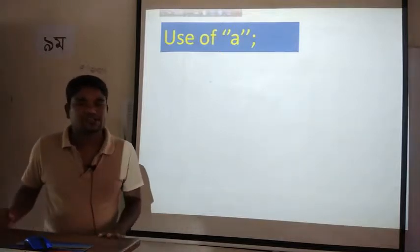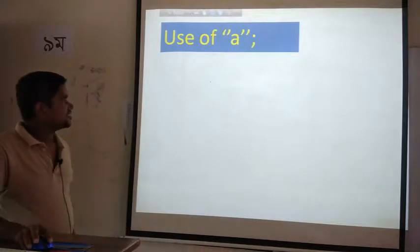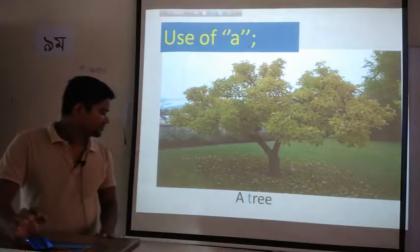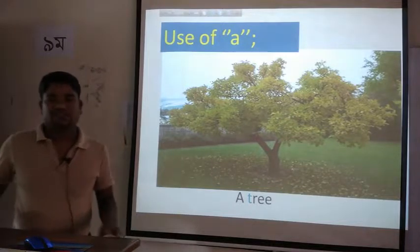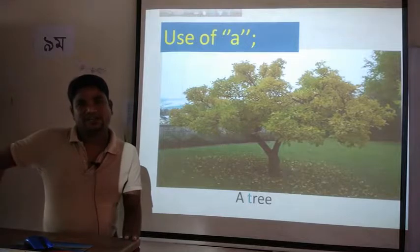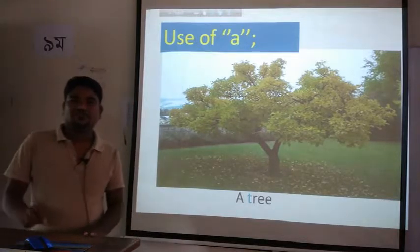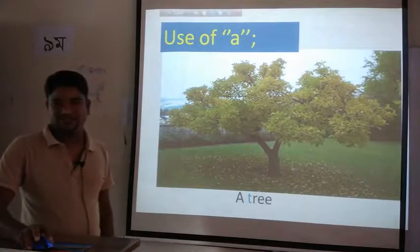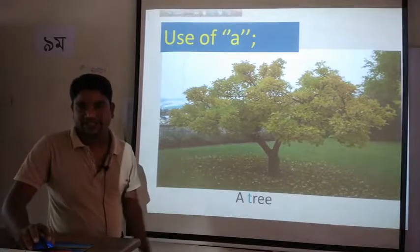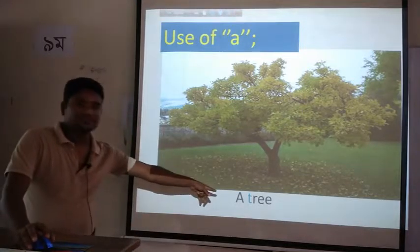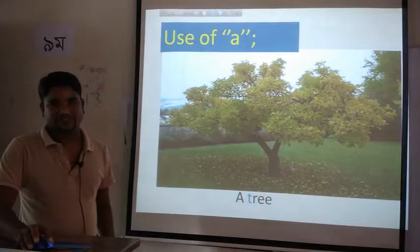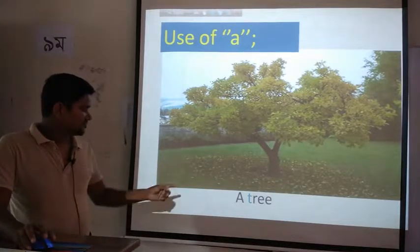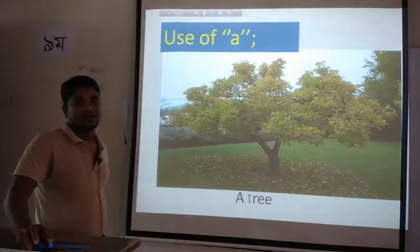We are going to discuss the use of A. Look, this is the picture of a tree. When the article A is used in a sentence, it is pronounced as 'A'. T is a consonant, so when a word begins with a consonant, we use the article A. This is the picture of a tree.